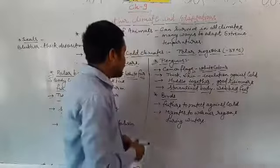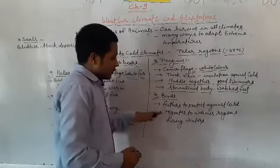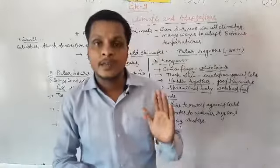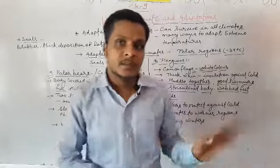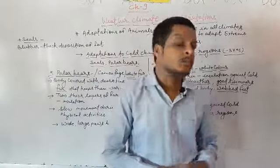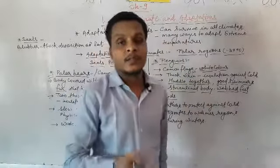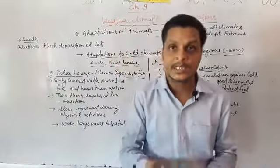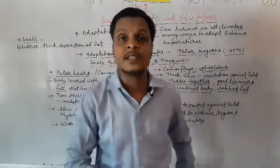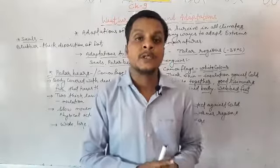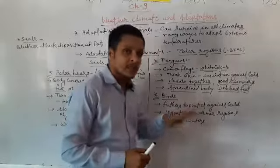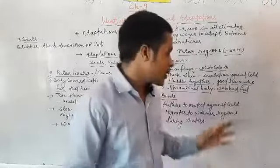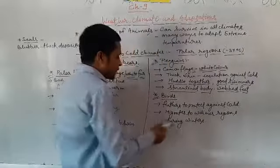Now about birds. Birds have feathers which protect them from cold. But that is not much help in polar regions. Feathers are not very protective where temperatures go as low as minus 37 degrees Celsius — they are not perfect for prevention from cold.